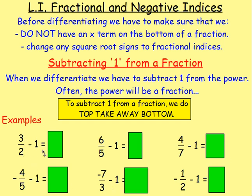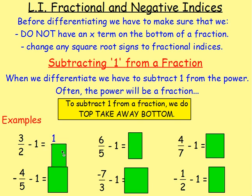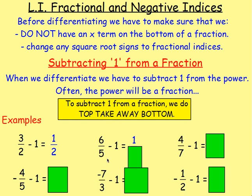Here are some examples to make this very simple. If you have a power of 3 halves — 3 over 2 — and you want to take away 1, you just do 3 take away 2, which leaves you with 1. And the power you're working with is halves, so it becomes 1 over 2. If you have 6 over 5, take away 1: you do 6 take away 5, which gives you 1, and the fraction is fifths, so it will stay as 1 fifth.